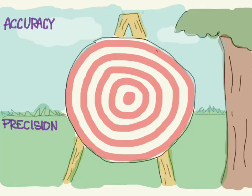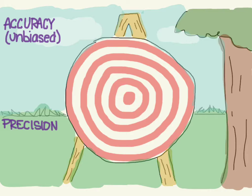These two terms are often introduced in the context of a dartboard or a target. Accuracy is sometimes also called being unbiased, so something inaccurate would be biased. Accuracy refers to how close you are to the center of the target — how close you are to the truth. Precision refers to how closely you can group your arrows when you shoot them.